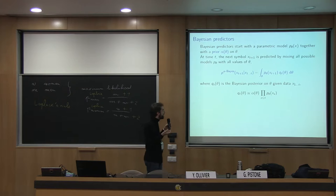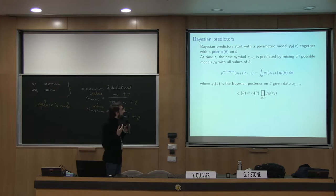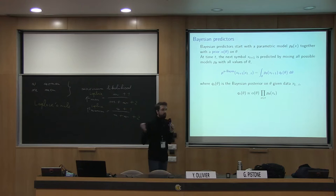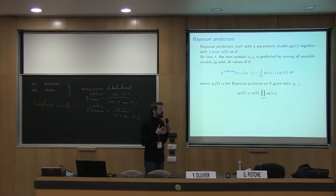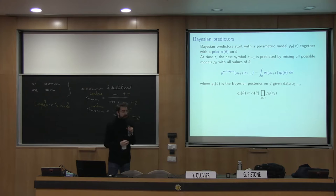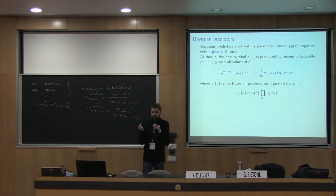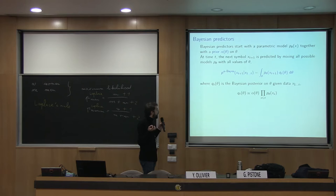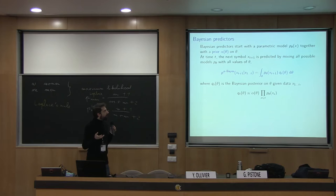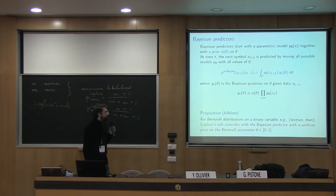If you can compute this integral, you can compute the Bayes prediction for X_{t+1} knowing X_1 through X_t. The problem is, in general, we cannot compute this integral — only for some very simple models. There are possibilities to approximate it, but they're not easy because you must maintain the posterior q_theta, which can have any shape — it's a completely arbitrary function. People use small dimensional families of functions to approximate q_theta, for instance, but in practice it's not so easy.